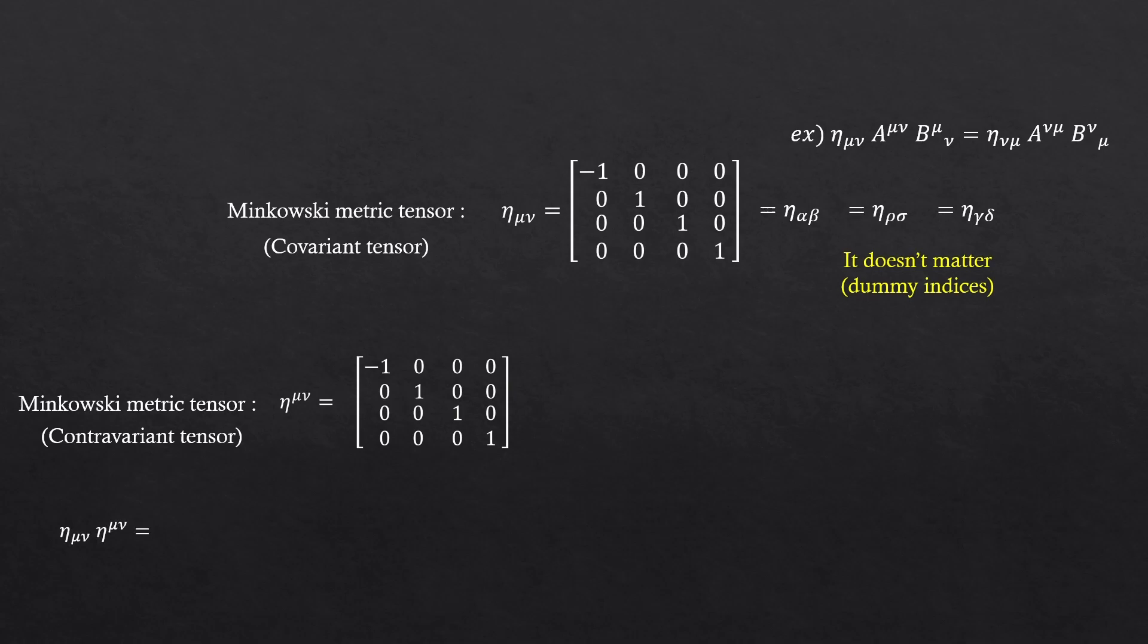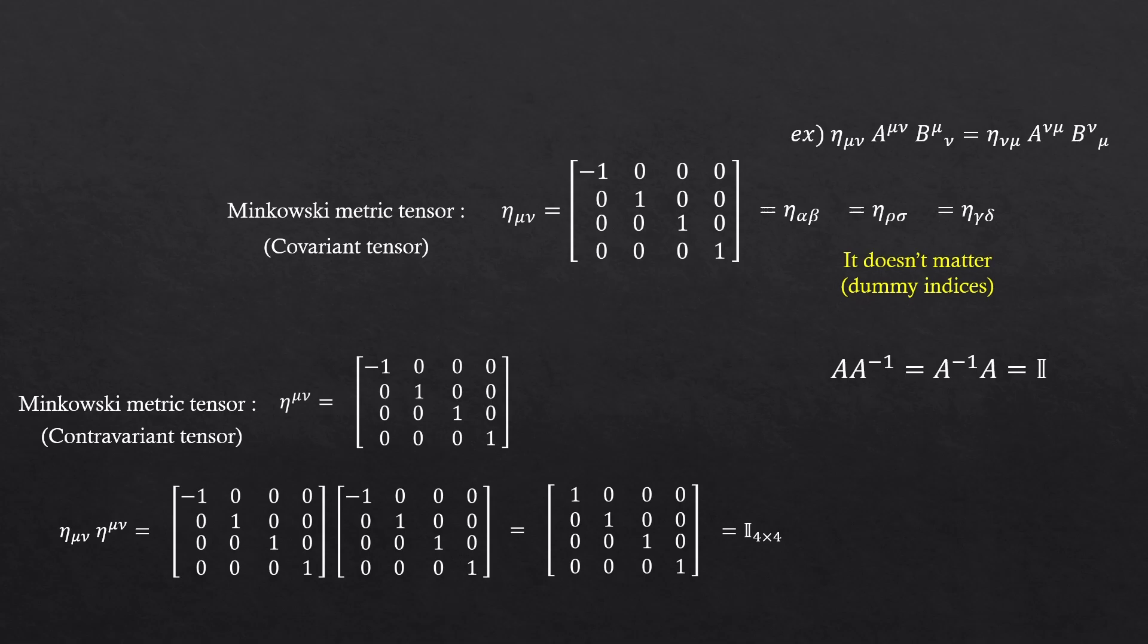So if you multiply this covariant metric by the contravariant metric, you'll get the 4-dimensional identity matrix. What's my question? Is a covariant tensor times its contravariant tensor same thing as the matrix times its inverse matrix? It looks like it as it's giving the identity matrix, but no. This is just for the metric tensors. Generally, covariant and contravariant tensors aren't inverse of each other. Don't confuse. It's just the metric in our case.